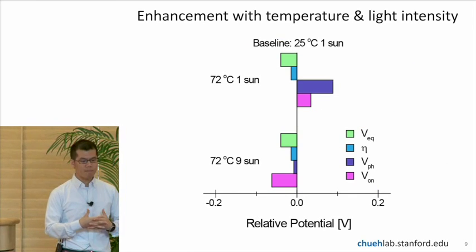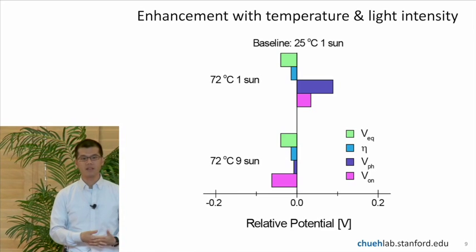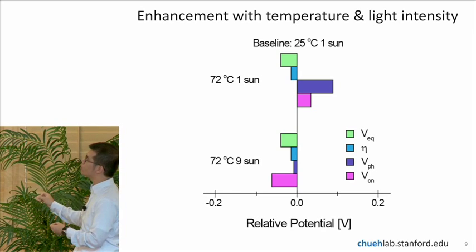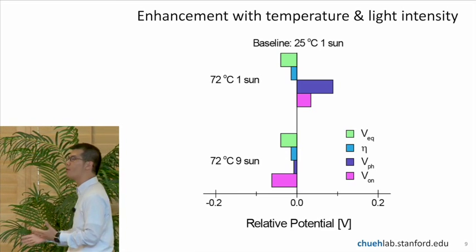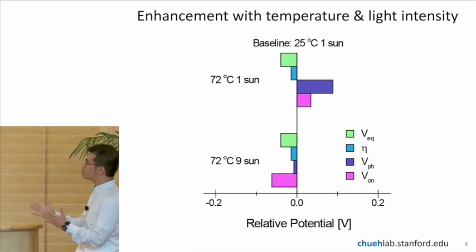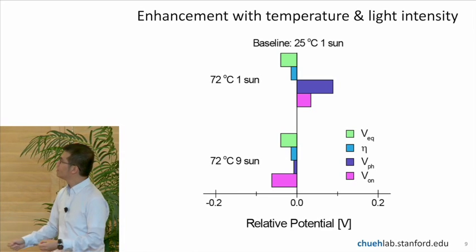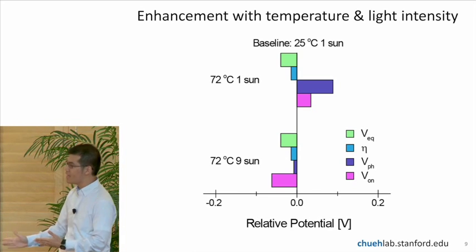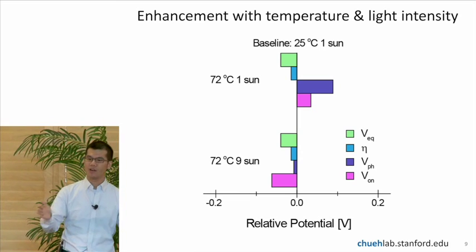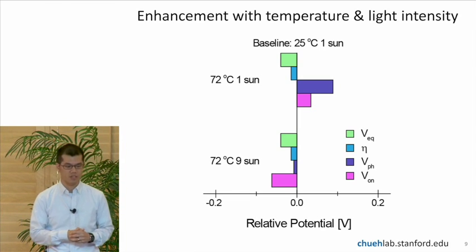This is just a plot showing you the enhancement. We were able to take the curves from the previous slide and decouple it into various contributions. Here I'm showing you the relative potential, so this is the relative voltage, if you will, compared to the baseline case, which is room temperature and one sun, no optical concentration.